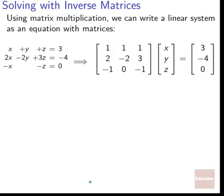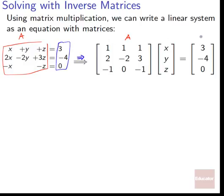The final method is solving with inverse matrices — my personal favorite for understanding how this works. Using matrix multiplication, we can write a linear system as a matrix equation. The coefficient matrix A times the column matrix of variables x, y, z equals our coefficient column. This is completely equivalent to the original linear system — multiplying the matrices gives back exactly the same equations.